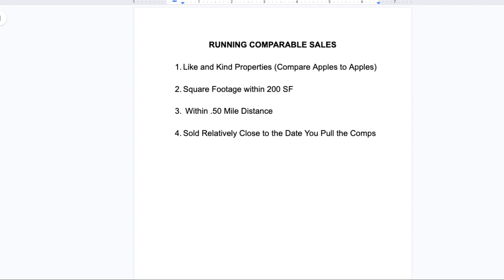I'm also searching for properties that are relatively close to the subject property. Most appraisers use a half a mile as the distance they're willing to go out and search for like and kind properties. In inner cities — like when I was living in Pennsylvania or in Brooklyn — you might search within a quarter of a mile radius, or even block to block. This really depends on the area you live in, but in suburban areas you can go out as far as a half a mile.